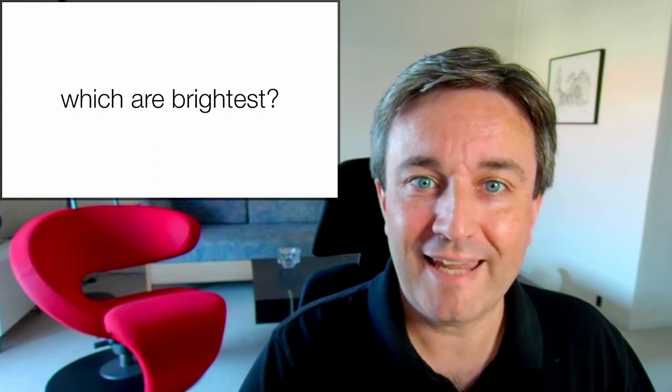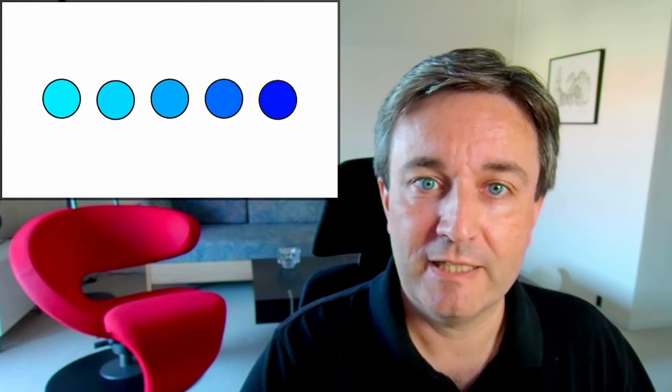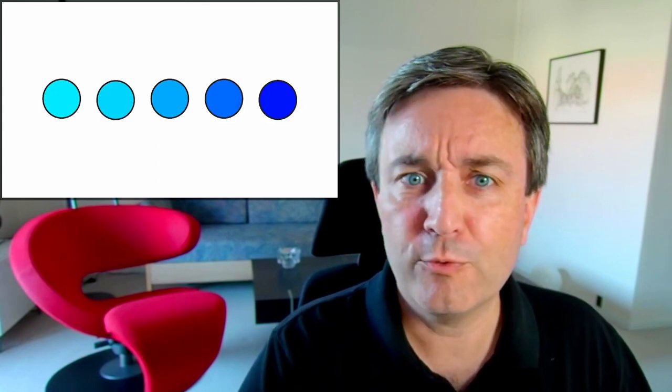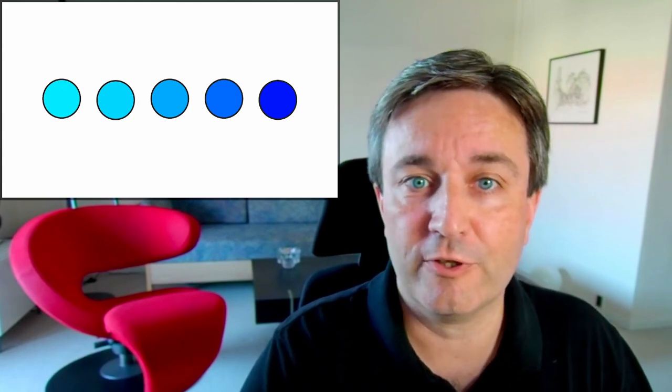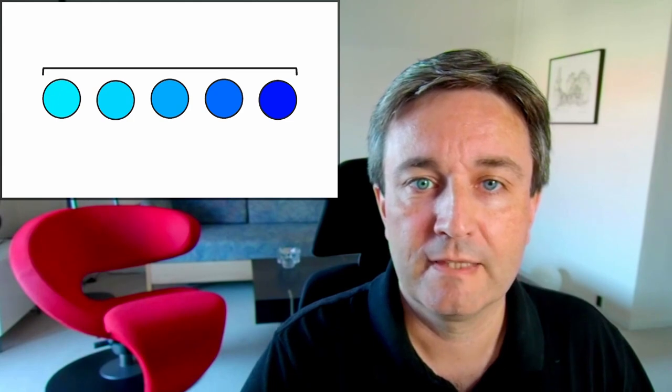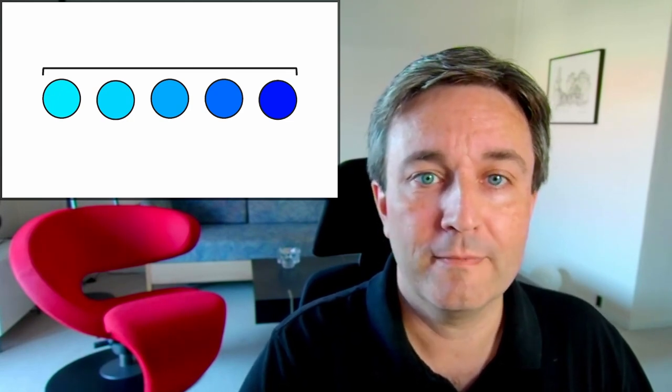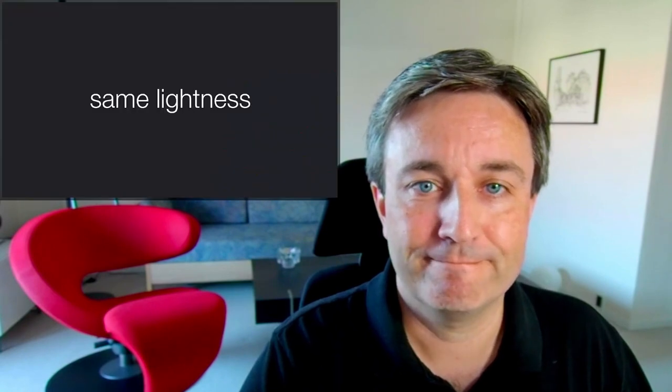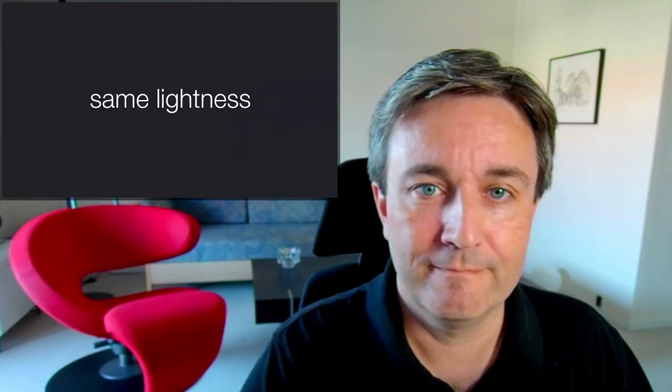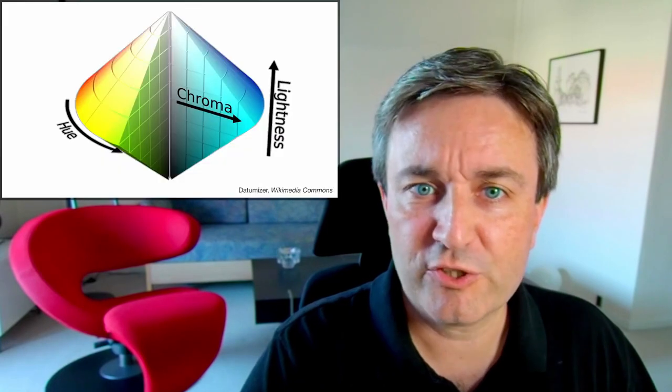So let's play the game. Which are brightest? Here are five new circles. And again, I hope you would agree, they are sorted from the lightest on the left to the darkest on the right. But according to this metric, they are all equally light. They have the same lightness value.